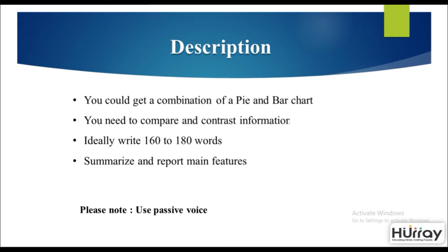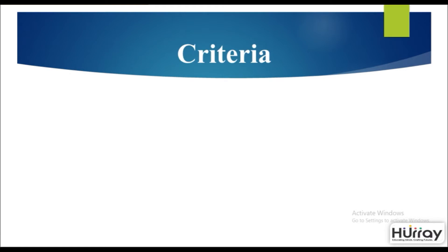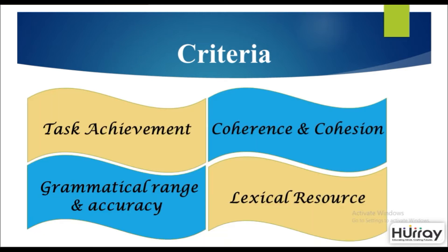Before writing, keep four important criteria in mind. First, task achievement — analyze all points and ensure you cover all features with a good structure. Second, coherence and cohesion — write proper sentences using simple and complex sentences, connected with the right linking phrases or transitional words. Third, grammatical range and accuracy — covering tenses, articles, prepositions, and parts of speech. Fourth, lexical resource — using good vocabulary will always give you a higher score in IELTS academic report writing.